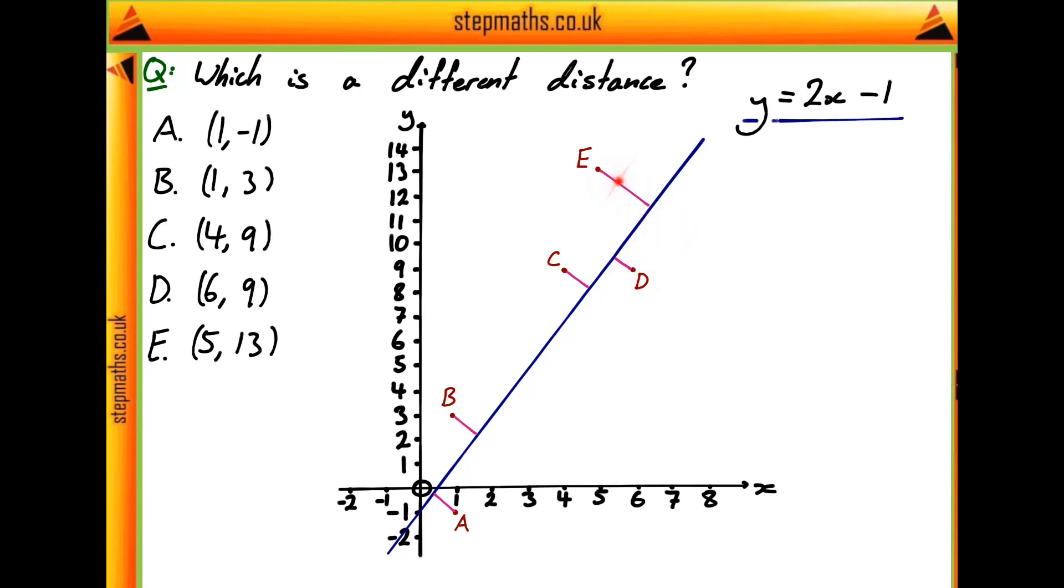So what I've done is I've labelled on these little pink lines to show the perpendicular distance from the line, y equals 2x minus 1, to the points. So I've just done this to make it a little bit clearer and see how far the points actually are from the lines.